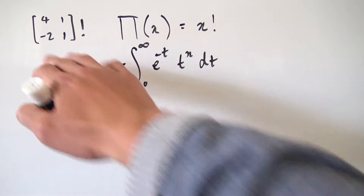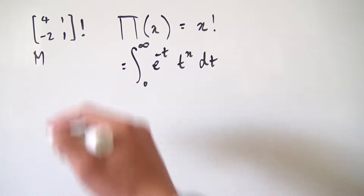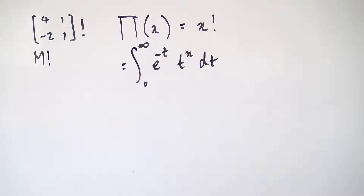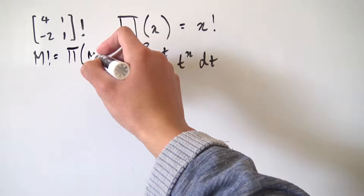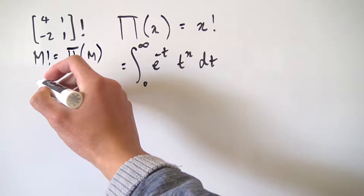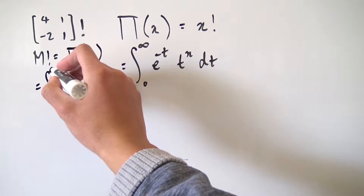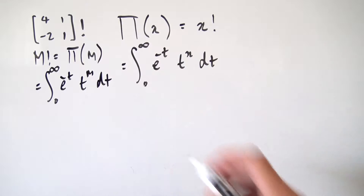Before getting into the specific example, let's look at the more general case. Consider some matrix M — we're just dealing with 2x2 matrices in this video, though you can extend it to any n by n matrix. We want to take the factorial of M. This is the same as taking the Pi function of M, which we can rewrite as the integral from 0 to infinity of e to the minus t, times t raised to the M-th power, dt.